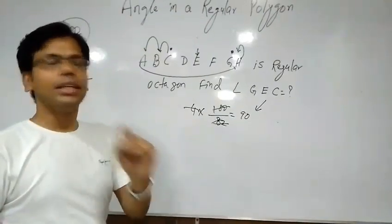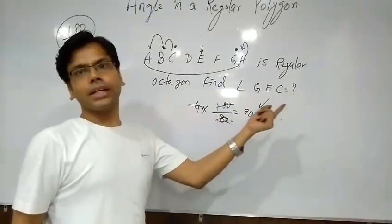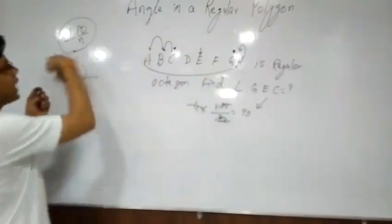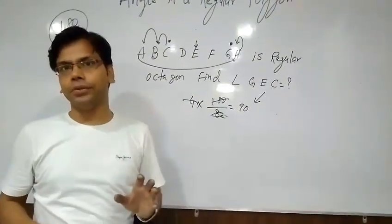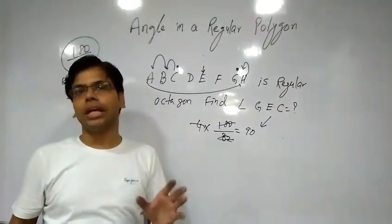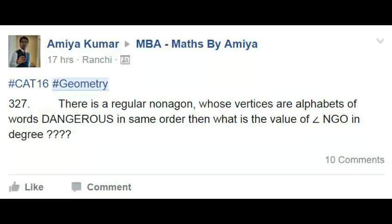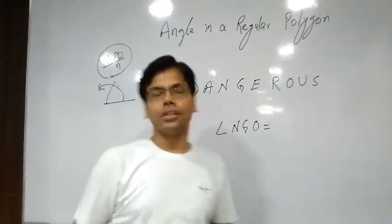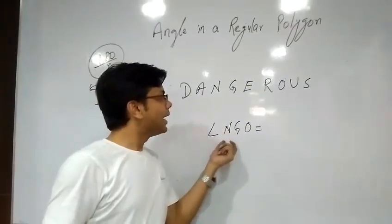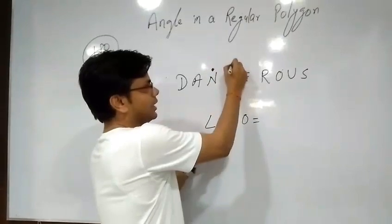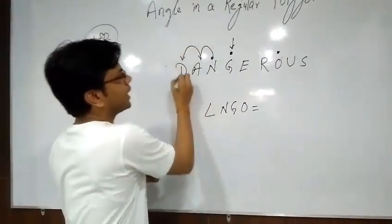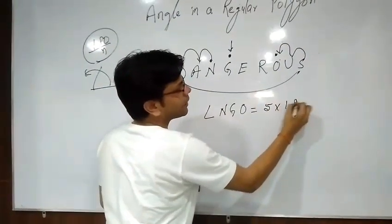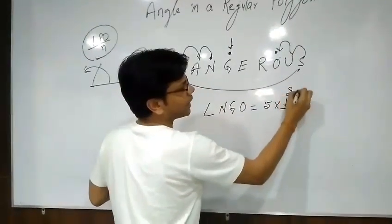How do we solve? Simply identify the vertices. The middle vertex is fixed — that is the vertex of the angle. The left and right vertices are the other two — we start from the left and count anticlockwise to the right. Now, I posted a question. The question is: D-A-N-G-E-R-O-U-S is a regular nonagon. Find angle N-G-O. N is one point, G is the middle point, O is the other point. Starting from the left-hand side and counting anticlockwise: 1 gap, 2 gap, 3 gap, 4 gap, 5 gap. We have 5 gaps. One gap is 180 upon n. For a nonagon, n is 9. So one gap is 180 upon 9, which is 20 degrees. Five gaps give 5 into 20, which is 100 degrees.